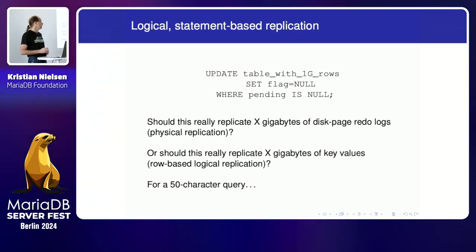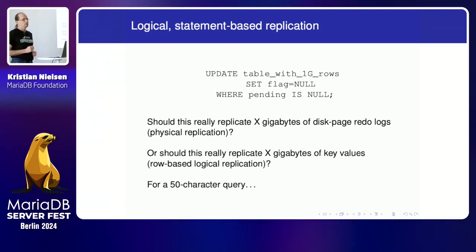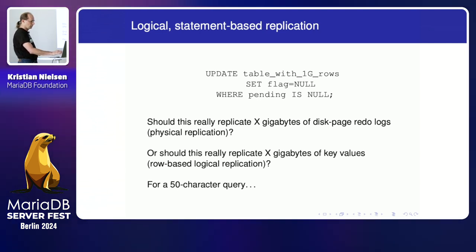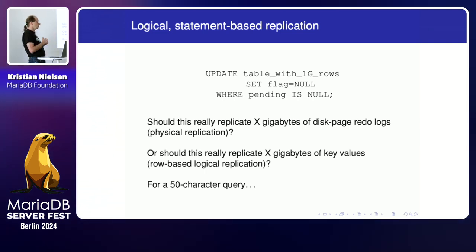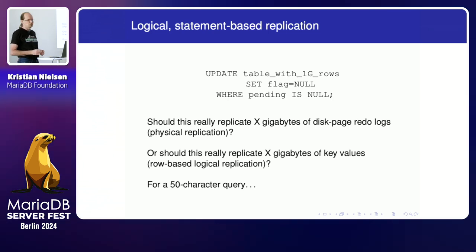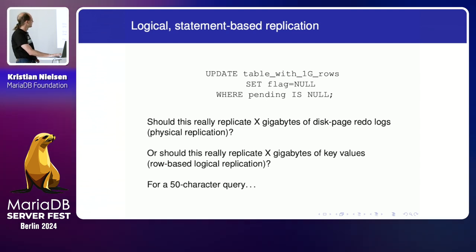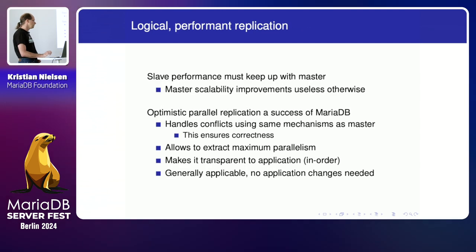So much effort over the years went into InnoDB row-level locking to make this work. It's really complicated. It's often said that users can just use row-based replication — it's much easier. But you get a factor of ten billion slowdown for the network. So statement-based replication is something very advanced.